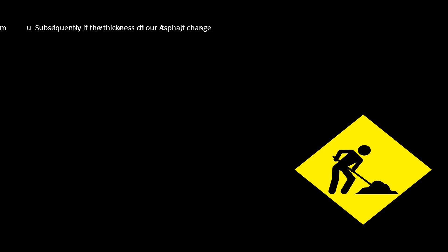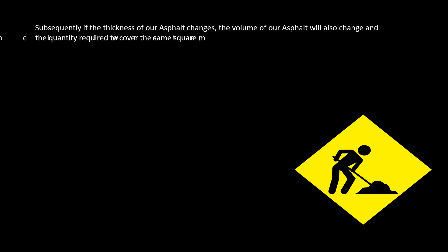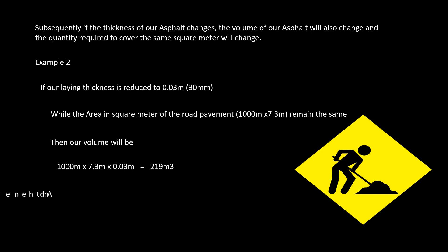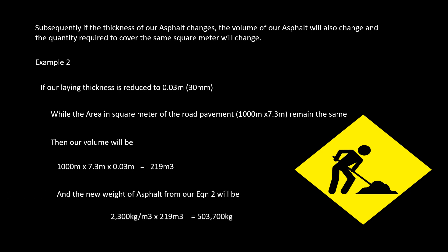If the thickness of the asphalt changes, the volume will also change and therefore the quantity will change, even though the area in square meters remains the same. Example two: if our lane thickness is reduced to 30 millimeters while the area remains the same, the volume will be 219 cubic meters. Using equation two, 2300 kg/m³ multiplied by 219 m³ gives 503,700 kilograms, which equals 503.7 tons of asphalt.